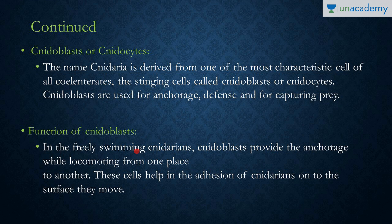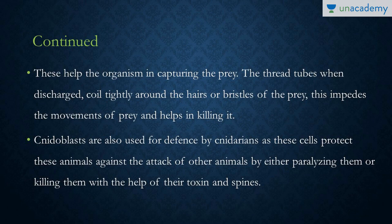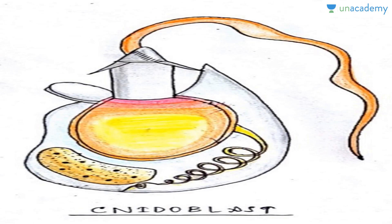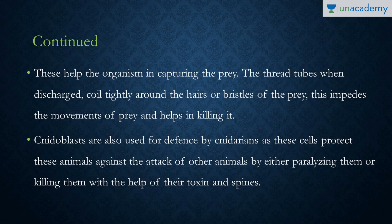In the free-swimming cnidarians, whenever they need to anchor or stay at a place, these nematoblasts help in this function. These cells also help in the capture of prey — basically, the thread tube, when discharged, coils tightly around the hair or bristles of the prey, which prevents its movement and helps in killing it.